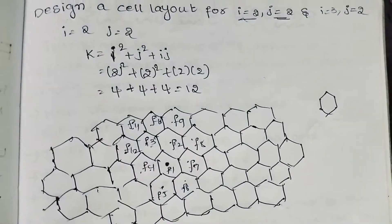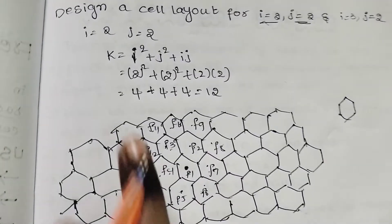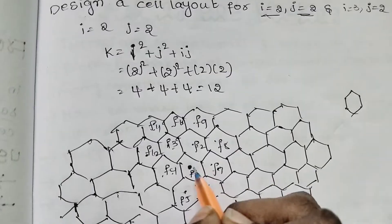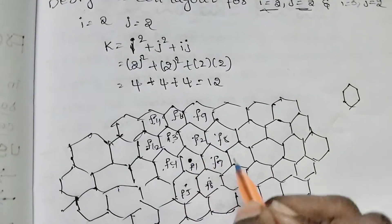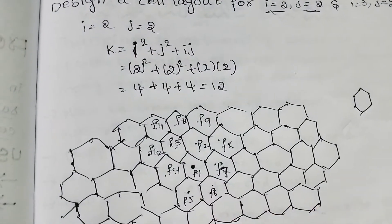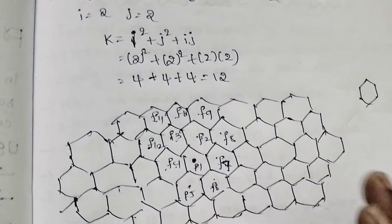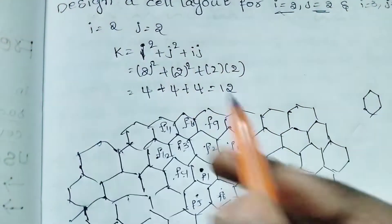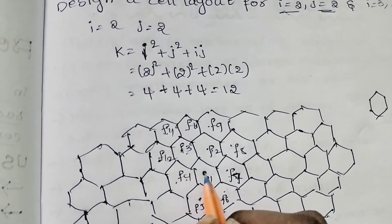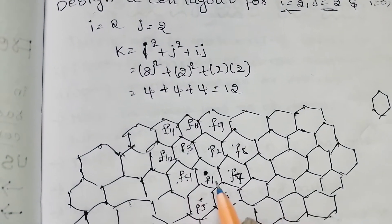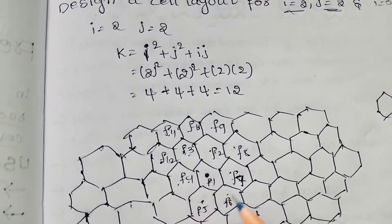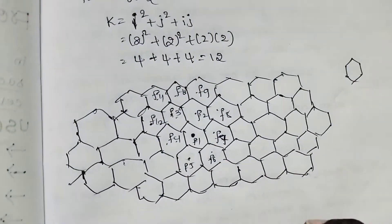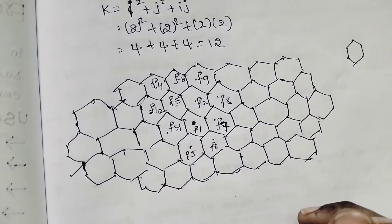If we touch these cells, we will not touch the adjacent cells. If we have 7 cells, we can touch the 7th. If i equals j, we will draw the cells. This is the total structure of the cell.